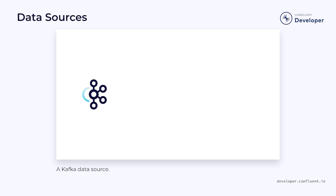Data streams also have a source, but rather than drawing water into the stream, they're pulling data from somewhere. This might be coming from a database, but often it comes from a streaming source such as a Kafka topic. However, their job is the same as the water pump — they pull in the data and push it downstream.